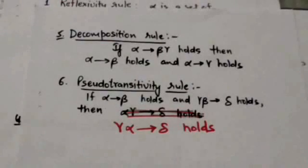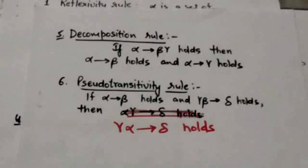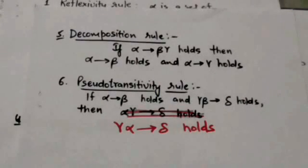The fifth rule is the decomposition rule. It states that if a functional dependency from alpha to beta-gamma holds, then the functional dependency from alpha to beta and the functional dependency from alpha to gamma also hold. Here beta-gamma denotes beta union gamma.